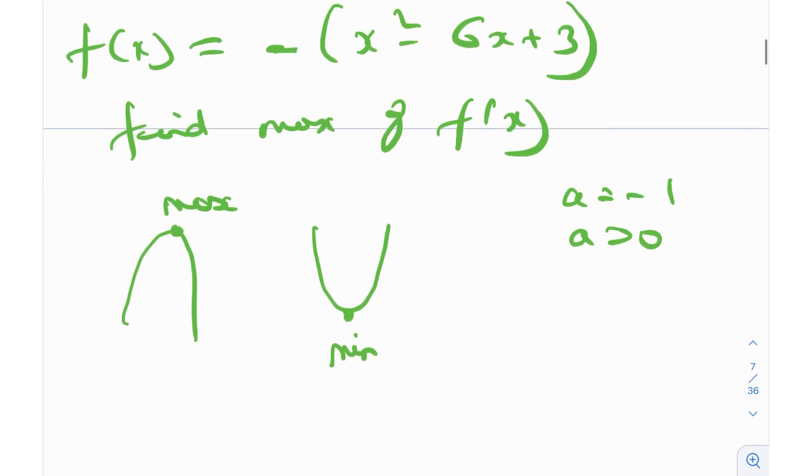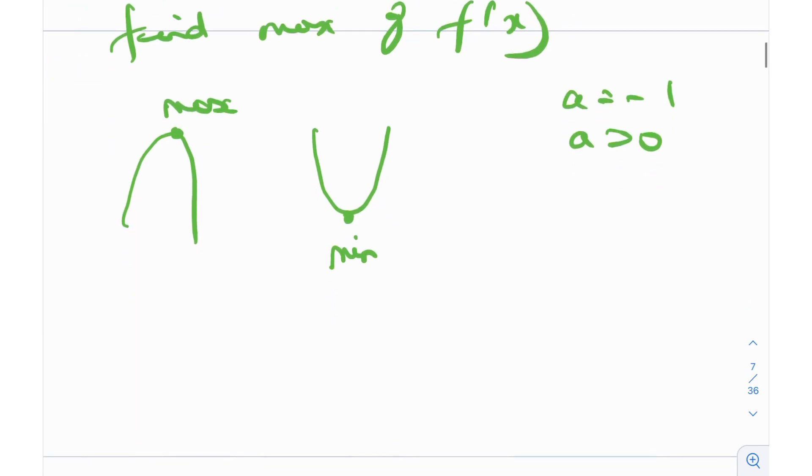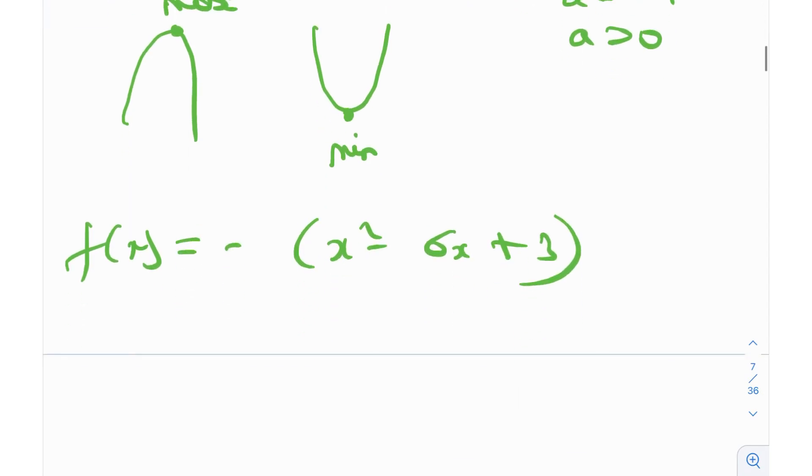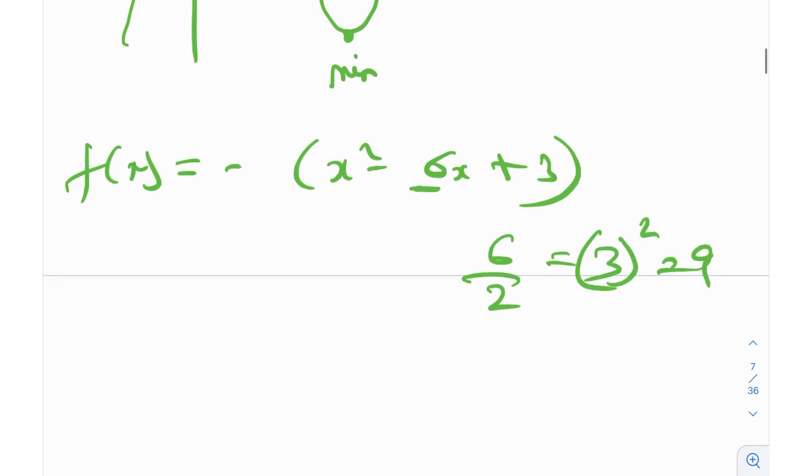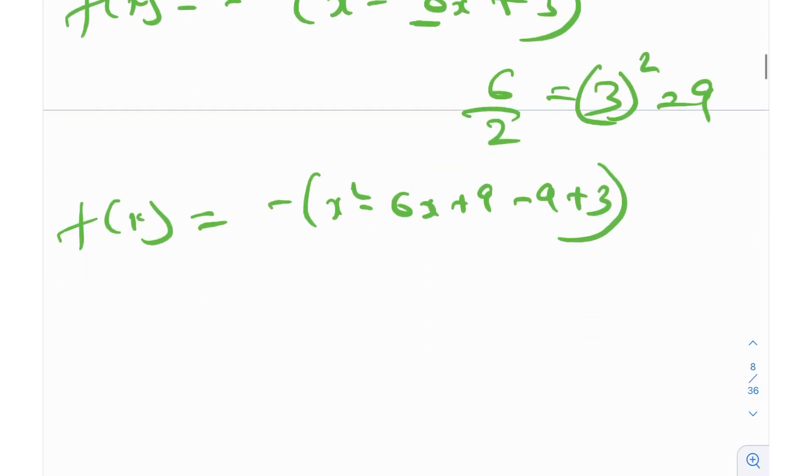The way to find this maxima, because it's a downward opening parabola, is to complete the square. So f(x) is negative of x² - 6x + 3. How do you complete the square? You look at the middle term, which is 6, you divide that by 2, you get 3, and then you square it up, you'll get 9. So you add 9 and subtract 9.